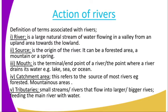Number five: tributaries. These are small streams or small rivers that fall into larger or bigger rivers, feeding the main river with water. For example, the tributaries of River Tana include Diba, Murubara, and Nyamindi. All these are tributaries of the Tana River.